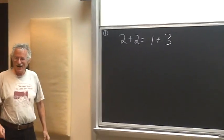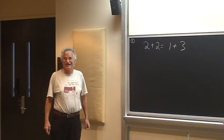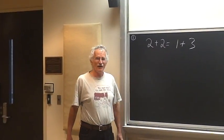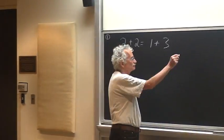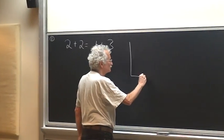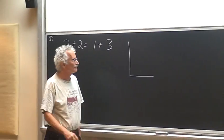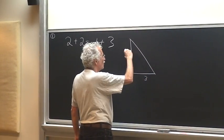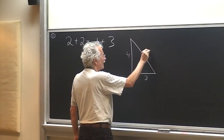So for a long time, mathematics was a nice empirical science. In ancient Egypt, ancient Babylonia, you measured 90 degrees by having a three by four by five rectangle.